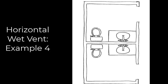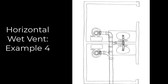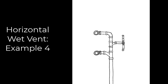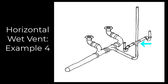Let's return to our horizontal wet vent examples. Example four: in this floor plan we have two half bathrooms back to back — two toilets, two lavatories. We're going to horizontal wet vent these. The pipe comes up through the middle of the fixtures, first branching off to the toilet, then branching off for the lavatories, which will be common vented, and then it catches the last toilet. The wet vent includes the drain pipe from the common-vented lavatories down through the three-inch pipe to the last toilet fixture.